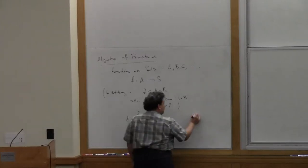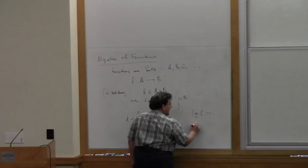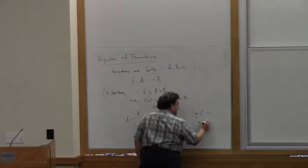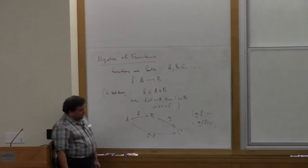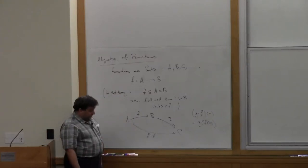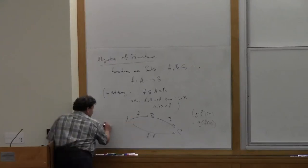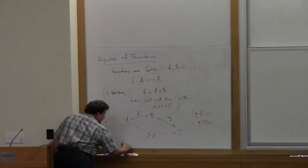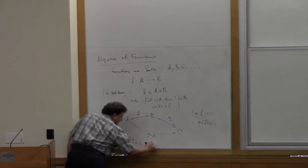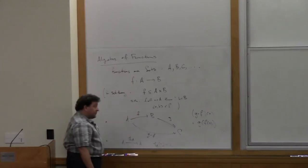G after F applies to an argument x from A to give G applied to F applied to x. That's the basic composition operation. And then there's another operation, which is even simpler — the identity function. For each set A, there's an identity function, which I'll write as 1 sub A, and 1 sub A for any element x is just x. That's the usual identity function. So that's the basic data: a composition operation and an identity function operation.